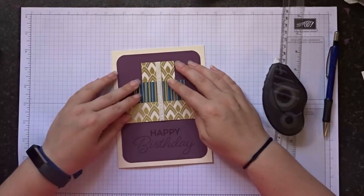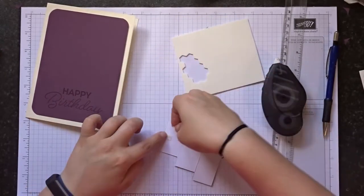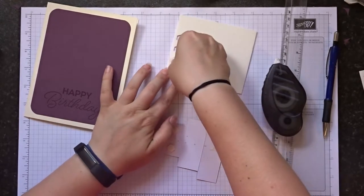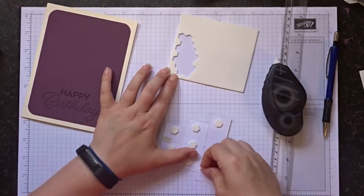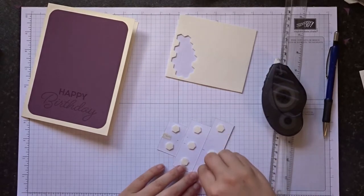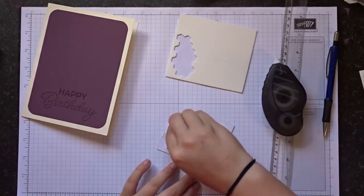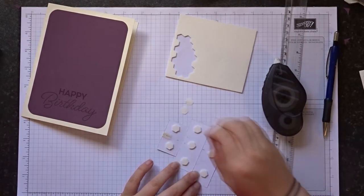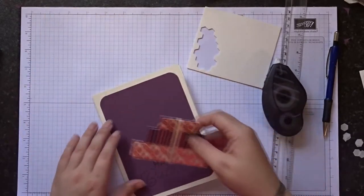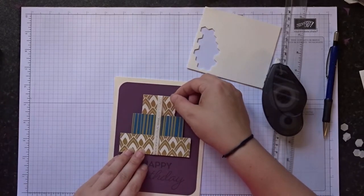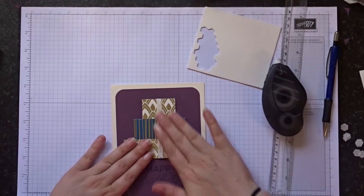Then grab your card. I'm just going to stick it up with some dimensionals just to give a bit of a 3D effect. So as I say this card is very simple but goes well with the other two items that I've made which I'll show you in a second. So just peel off the backing on the dimensionals. I'm just going to line that up and stick it down.